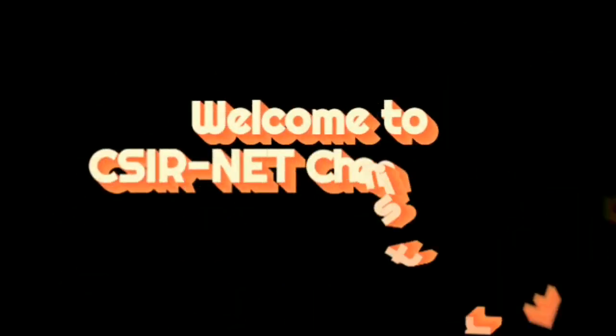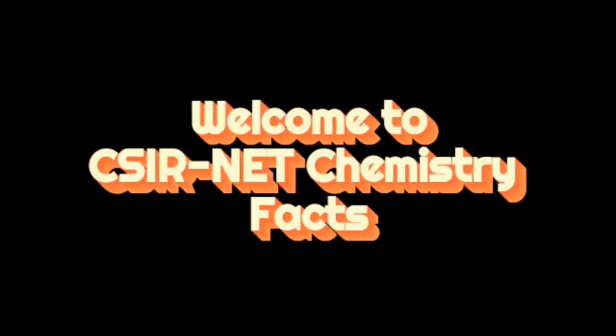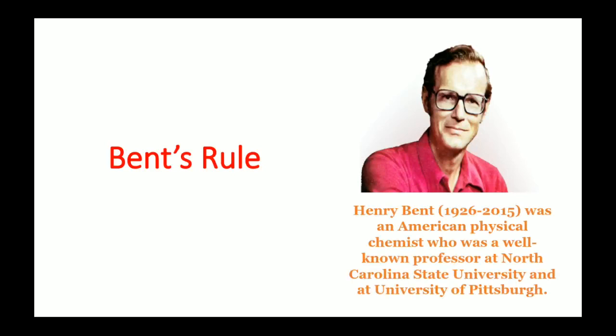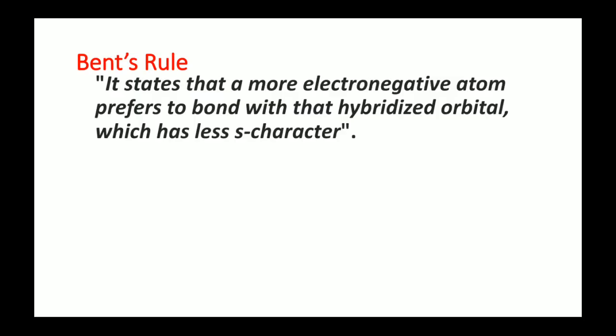Welcome to CSR Net Chemistry Facts. Today we will discuss Bent's Rule. This rule was discovered by Henry Bent, who was an American physical chemist. I will give a detailed description of Bent's Rule, and after that I will solve some CSIR-NET questions related to it. Bent's Rule states that a more electronegative atom prefers to bond with a hybridized orbital which has less S character.